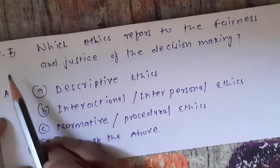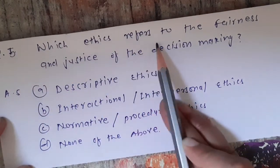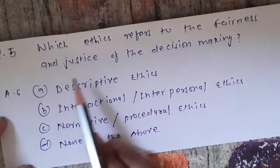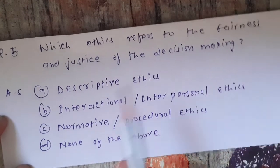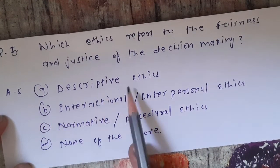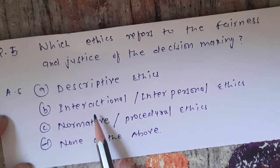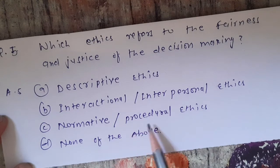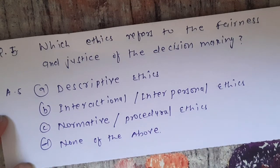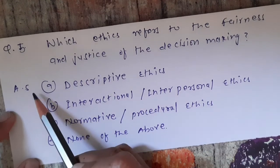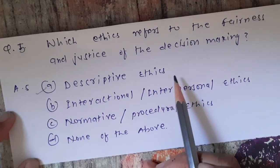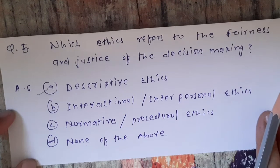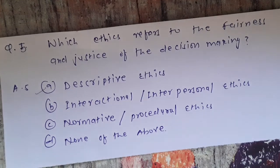Question number five: which ethics refers to the fairness and justice of the decision making? Options are: A) descriptive ethics, B) interpersonal ethics, C) normative or procedural ethics, D) none of the above. The correct answer is option A, descriptive ethics. Our MCQs are completed, thanks for watching.